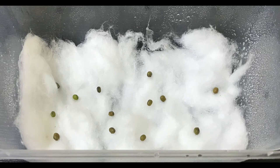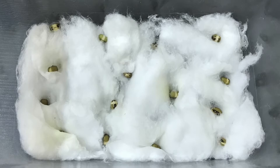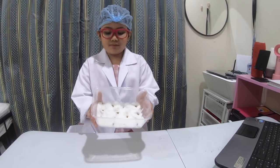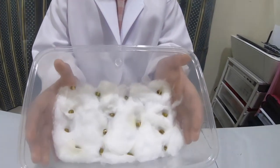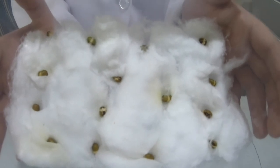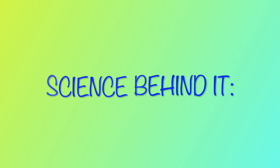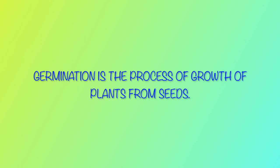Day one, nothing happens. Day two, the skin of the seeds started to peel off and sprouts are starting to show. Day three, small hair-like growths are formed like roots. If seeds are kept moist for a few more days, another white structure emerges from the seeds which later develops into shoots. Germination is the process of growth of plants from seeds.